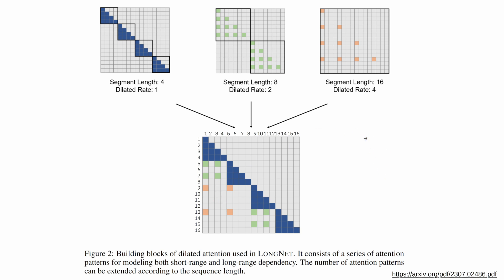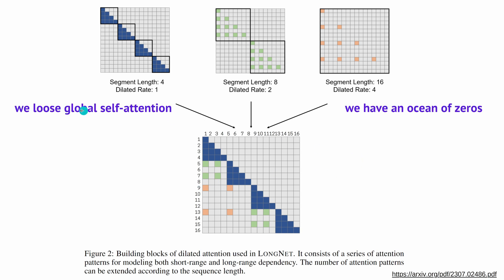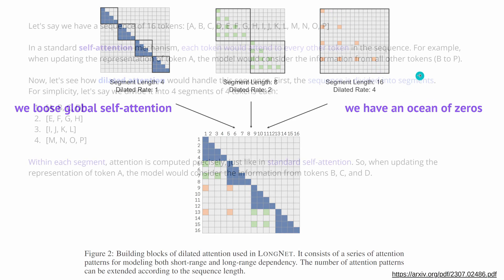This is the mechanism they use to achieve a sequence length of one billion tokens. We trade in the self-attention mechanism where we have a complete sub-diagonal field filled to the brim with tensors, and now we have this little something here and almost nothing there — our approximation. We lose the global self-attention of our 16×16 and go 4×4, 4×4, 4×4, then an ocean of zeros sprinkled with some tensors.